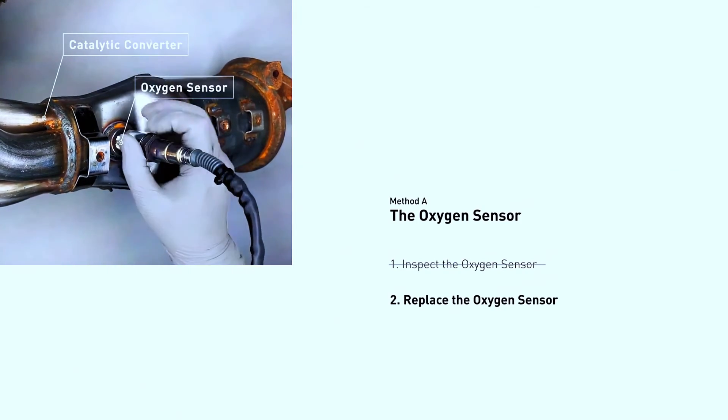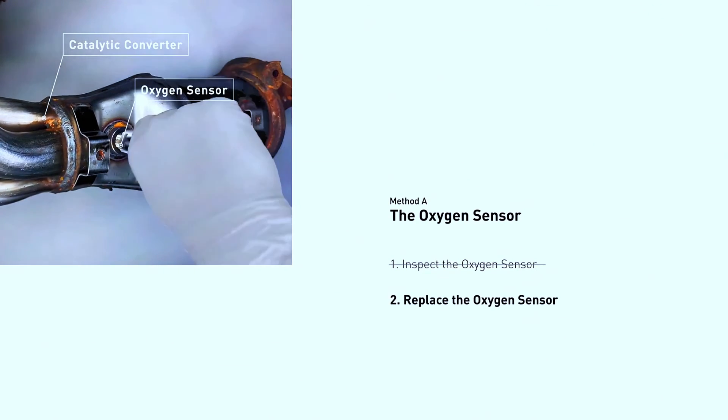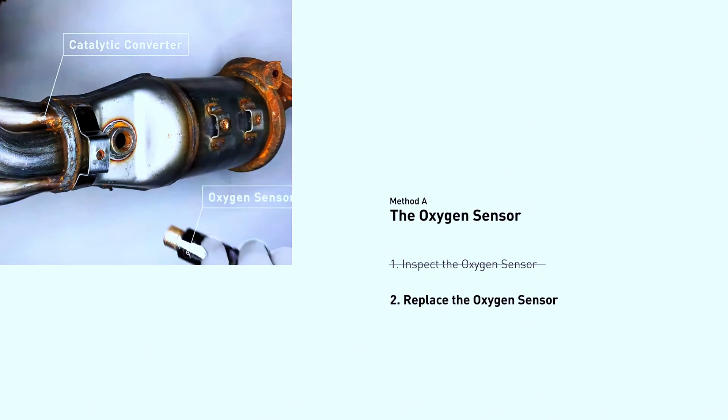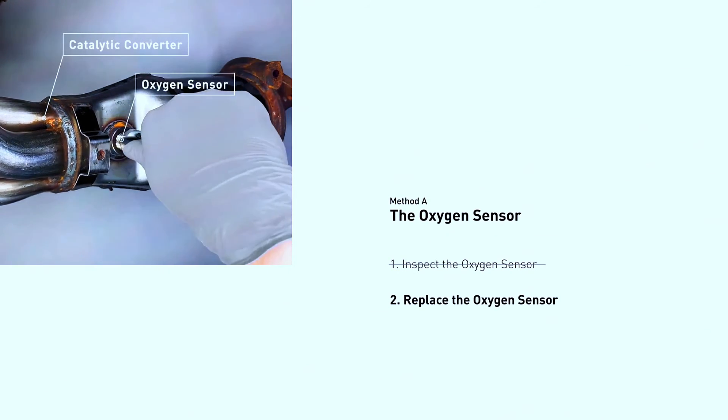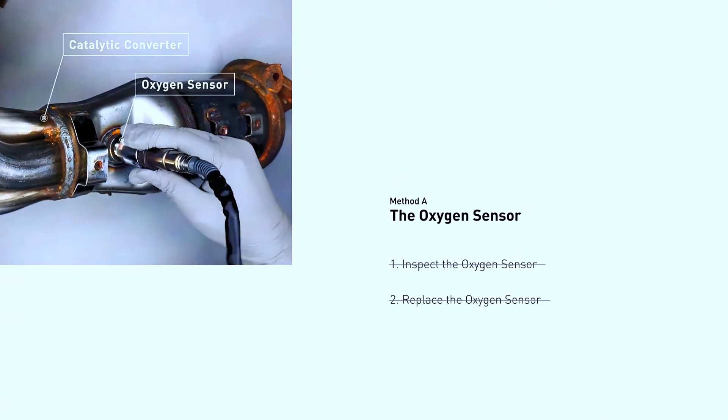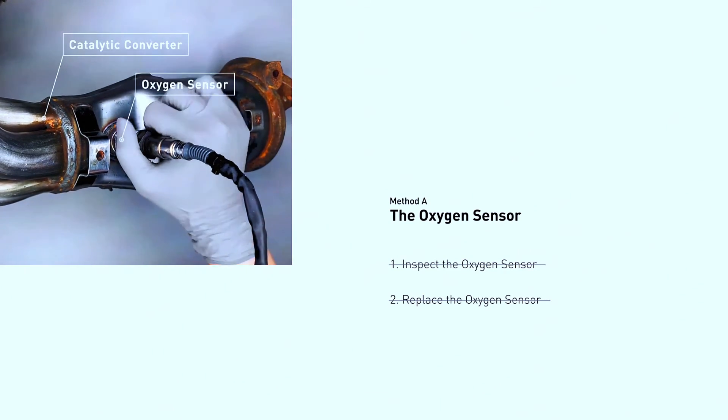Replacing the sensor: use the appropriate wrench or socket to remove the faulty sensor. Be careful, it might be tight. Screw in the new sensor hand tight first, then tighten it with the wrench following the recommended torque specifications referred to in the manual. Reconnect the wiring harness.